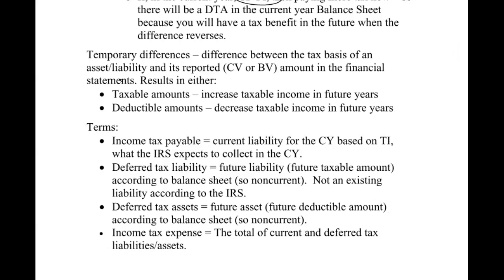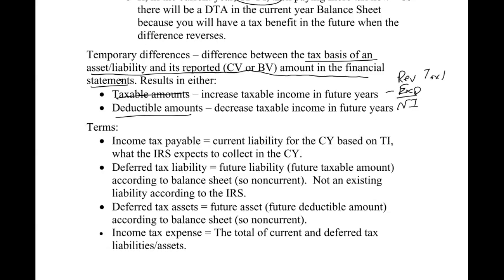A temporary difference is just the difference between the tax basis of an asset or liability and its reported amount in the financial statements. It results in taxable amounts or deductible amounts in future years. Think of it like a basic income statement: revenues less expenses gives net income. On the tax return, taxable amounts less deductions gives taxable income. Future taxable amounts increase taxable income; future deductible amounts decrease taxable income.